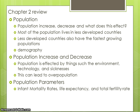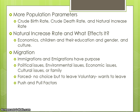More population parameters include crude birth rate, which is the number of live births per 1,000 people, and crude death rate, which is the number of deaths per 1,000 people. These help you look at a country's demographic characteristics. Natural increase rate is the difference between the crude birth rate and the crude death rate, and it shows how a country's population is growing.